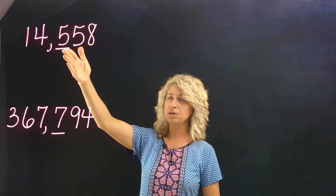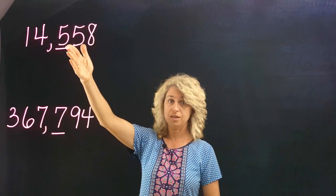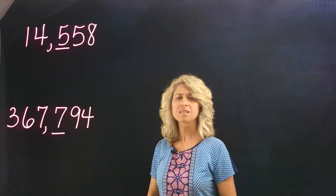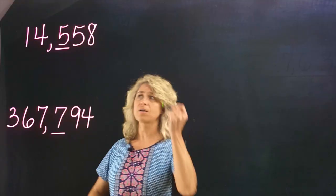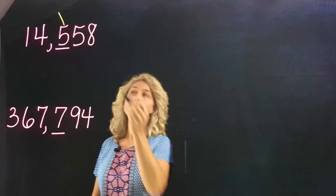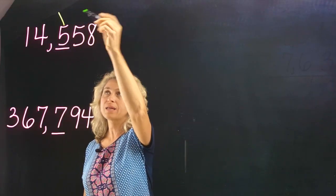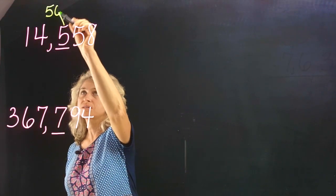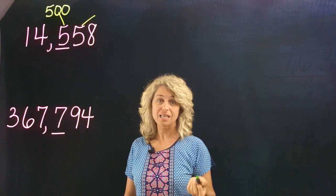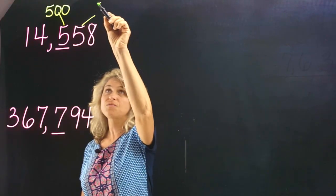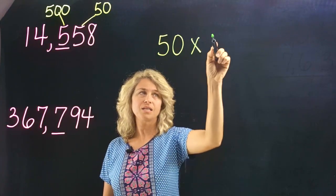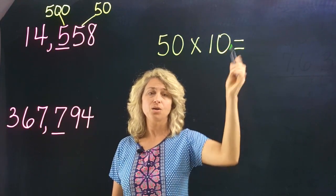How many times greater is the hundreds digit than the five in the tens digit? Let's see. What is the value of the five in the hundreds place? The five in the hundreds place is 500. Now what is the value of the five in the tens place? It is 50. 50 times 10 —